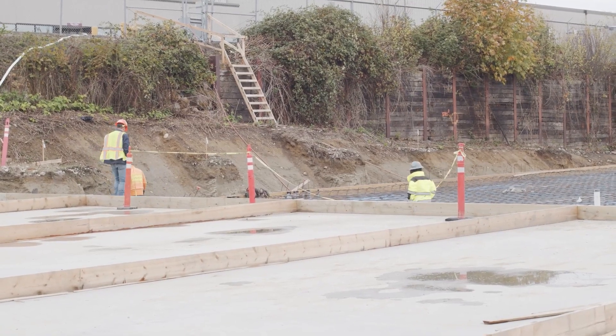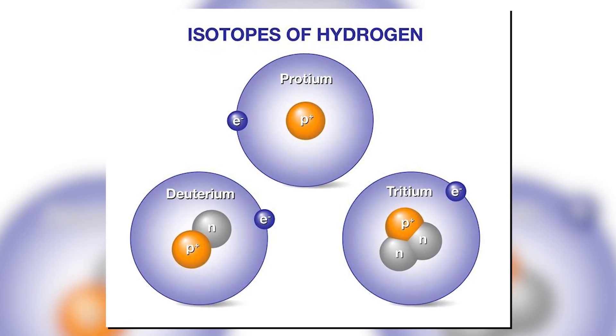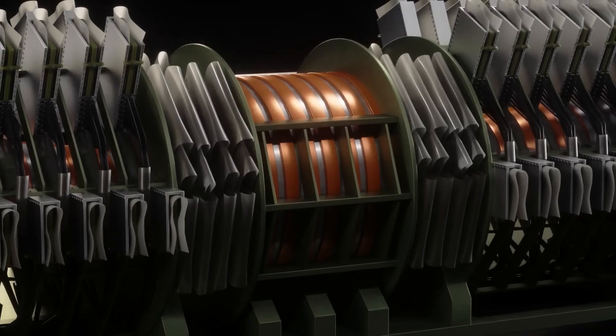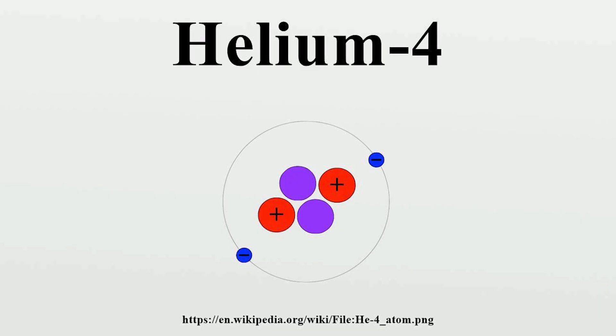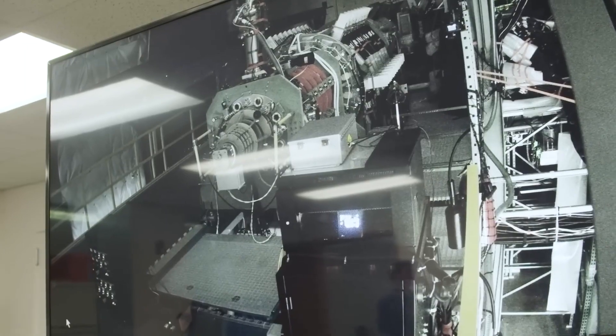Traditionally, the fuels explored for fusion involve isotopes of hydrogen: protium, deuterium, and tritium. However, Helion Energy has ventured into more promising fusion reactions. By combining deuterium and helium-3, an uncommon isotope of helium, they produce helium-4, along with a tremendous surge of electricity.